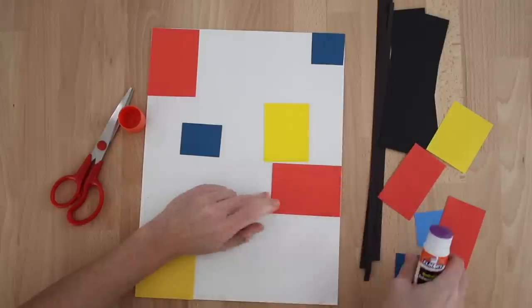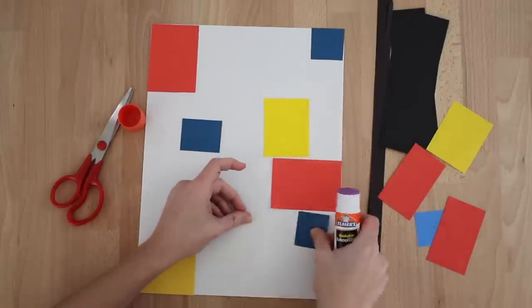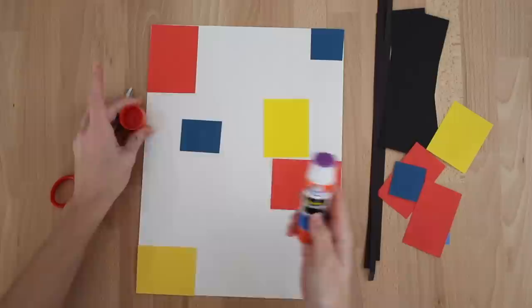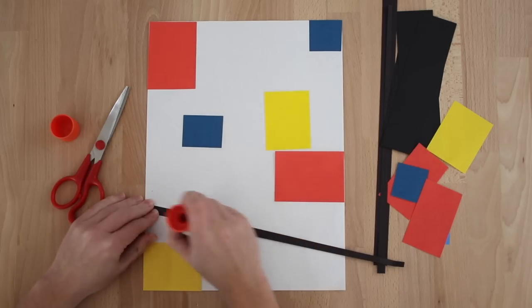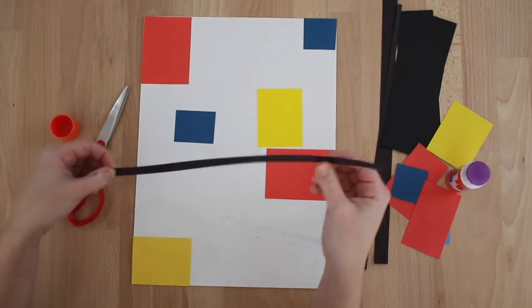After you are done gluing the number of squares and rectangles that you would like, you will begin using the black strips of paper. As you can see,